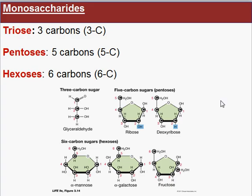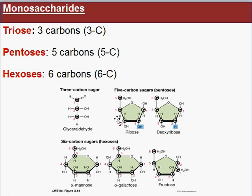There are three types of sugars we can classify based on the number of carbons. The first is a triose, which has three carbons. Next are pentoses — just like a pentagon has five sides, these sugars have five carbons. Examples are ribose and deoxyribose. These five-carbon pentoses are used to make DNA and RNA.